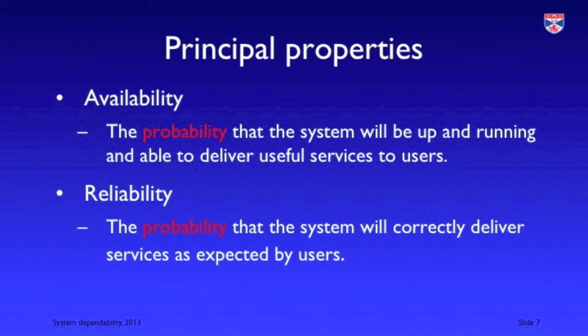Availability and reliability are probabilities. Availability is the probability that the system will be in service, and reliability is the probability that a system will respond correctly when a demand is made on it.